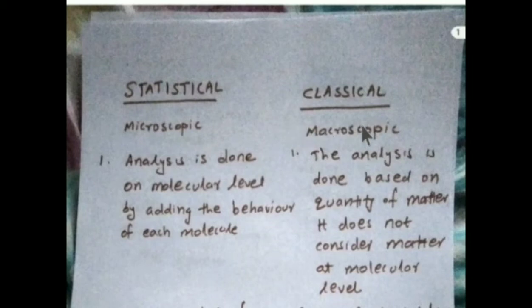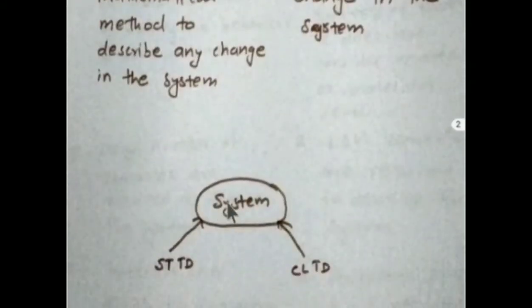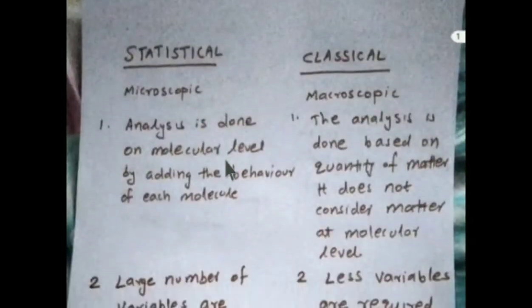The first difference: in the statistical approach, thermodynamic analysis is done at the molecular level by analyzing the behavior of each molecule. This is a molecular level approach. Each molecule is considered as a separate entity, and we find the behavior of each molecule and add up their molecular behaviors to get the overall system behavior.